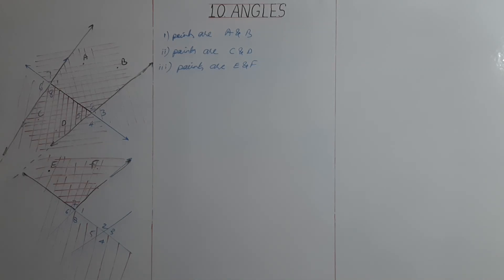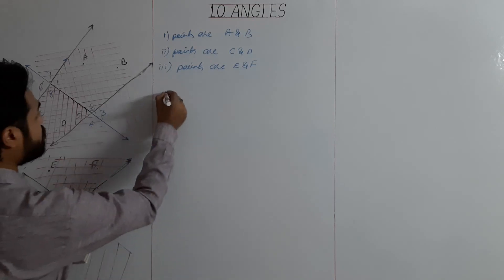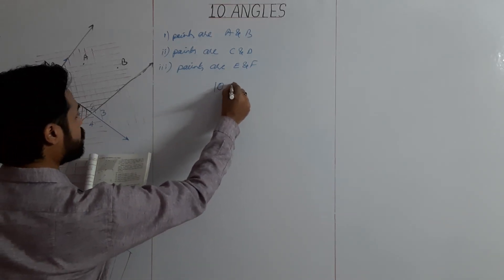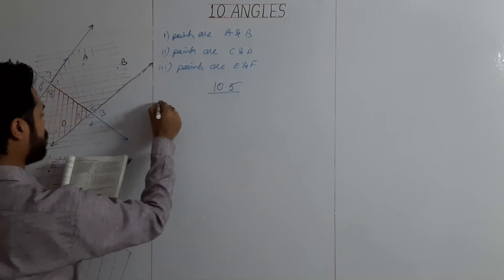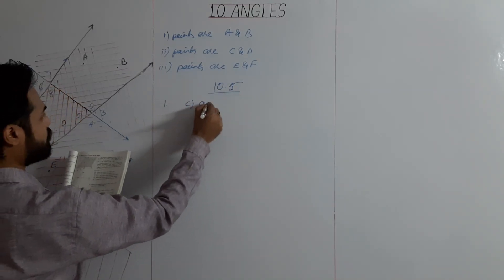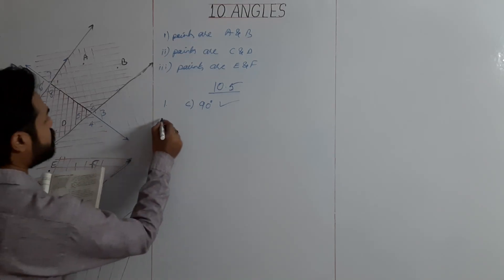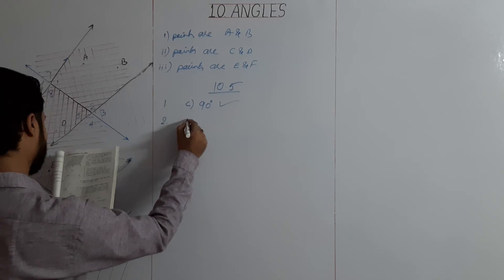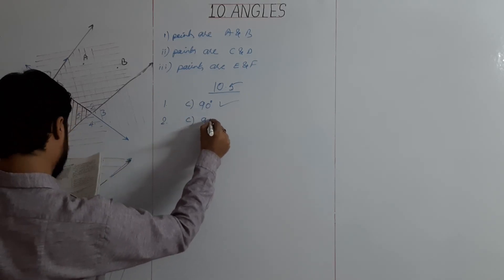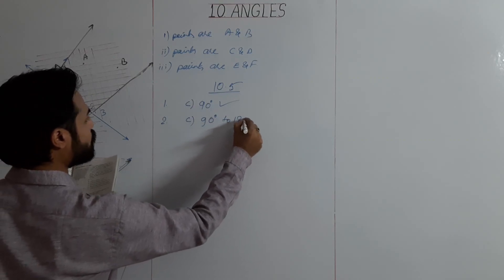Multiple choice questions. Question 1: an acute angle is less than — we know an acute angle is less than 90 degrees, so answer is C, less than 90 degrees. Question 2: an obtuse angle lies between — the answer is C, 90 degrees to 180 degrees.